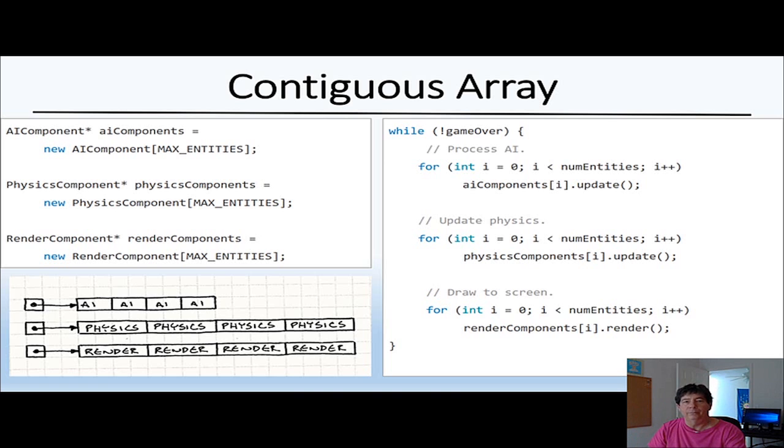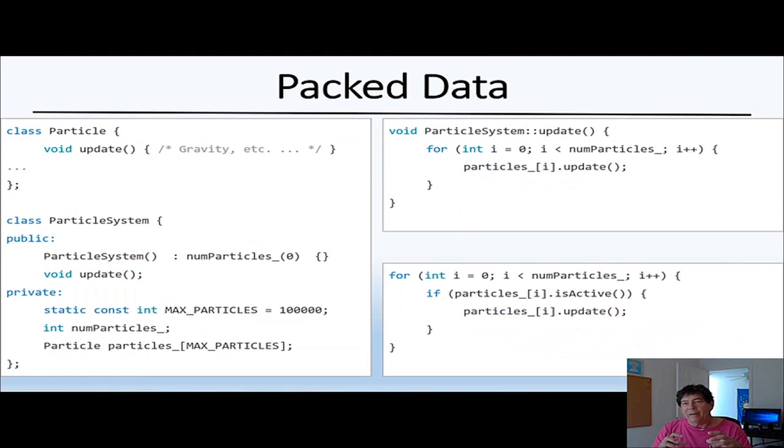So even if you have contiguous memory, you might be going through a really long list and chances of a really long list being cached is less than a smaller list being cached. Here we've got a particle system for a game and notice that it's got one long allocated block.